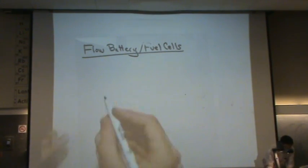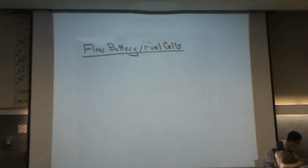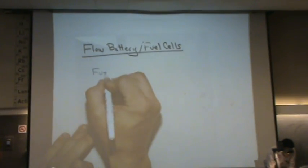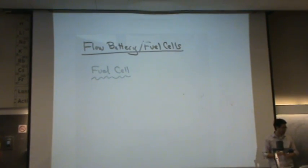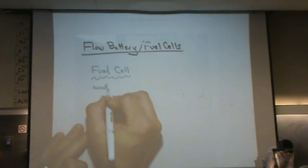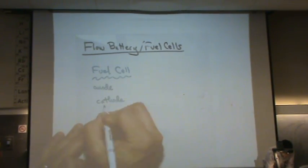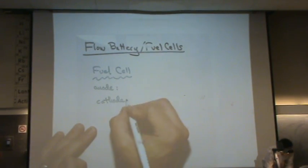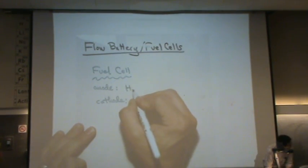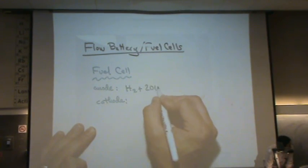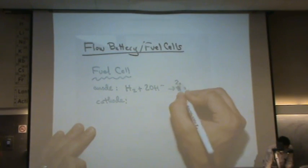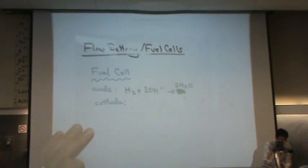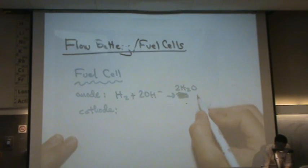There's a couple different kinds, but the first one specifically is the fuel cell. Let me write this one out first. Anode and the cathode. So here's the anode: H2 plus 2OH- goes to 2H2O plus 2 electrons.